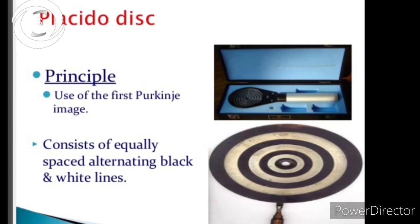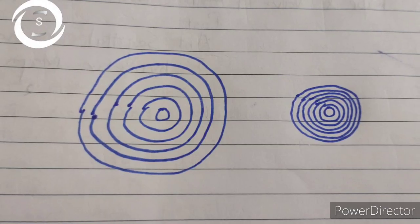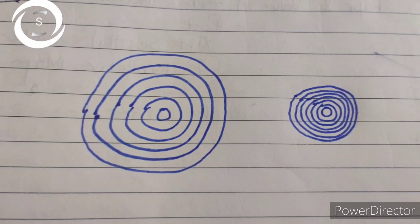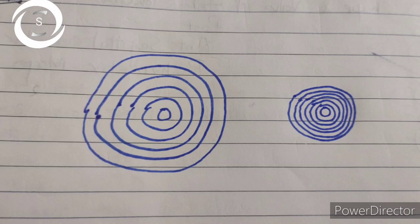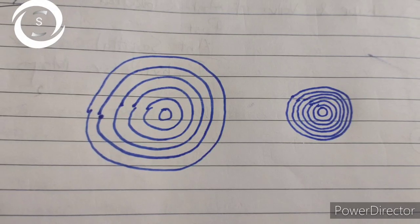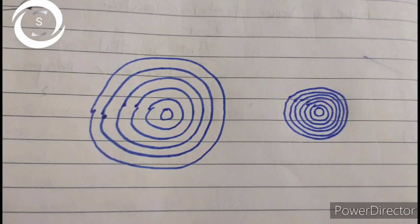Normally you can see normal spaced corneal rings that will show normal cornea. If the mires or rings are widely spaced, then it indicates flat cornea, and closely spaced rings shows a steeper cornea.